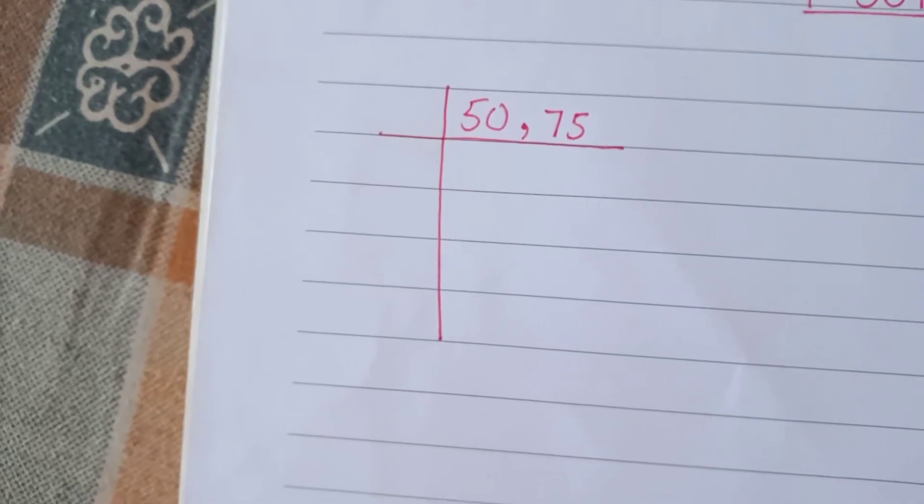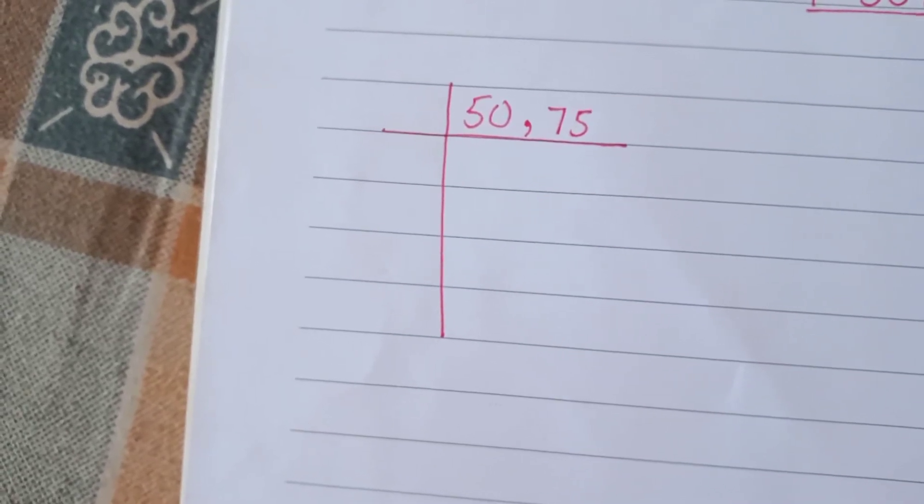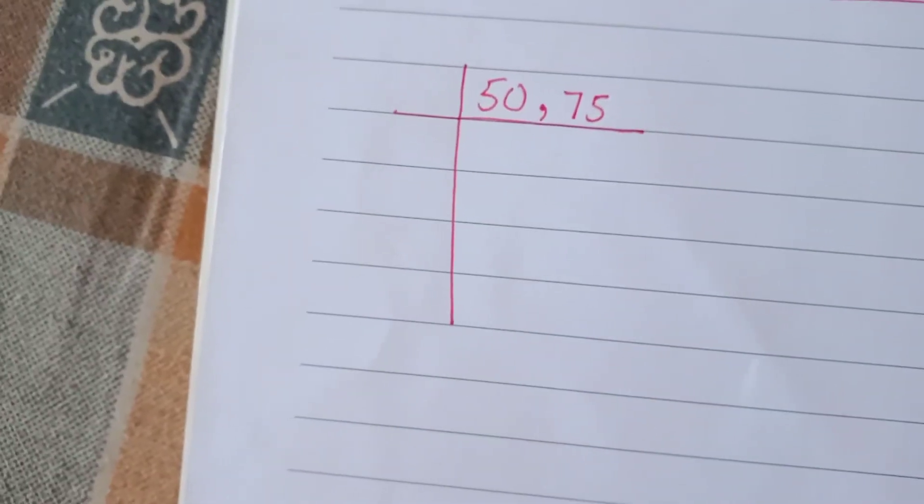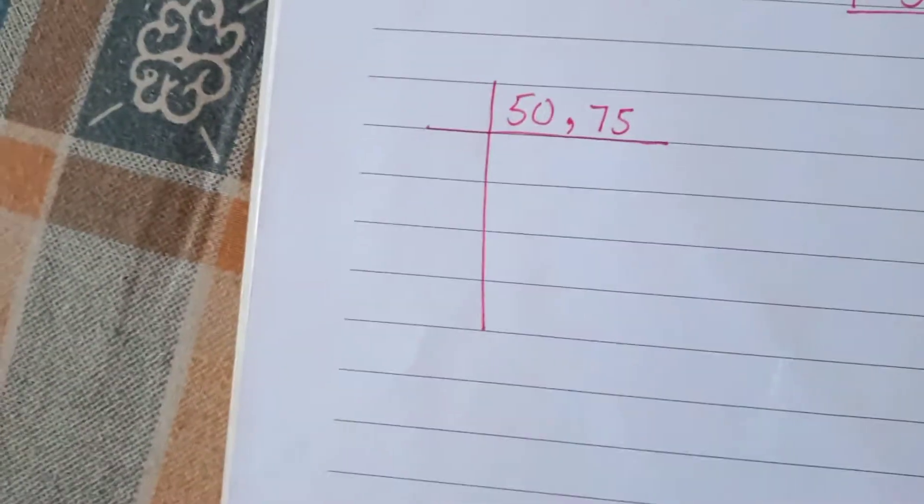Students, today we will find the least common multiple of 50 and 75 by division method. So, let's start it.